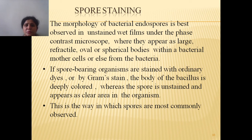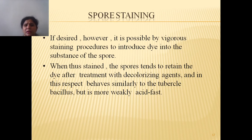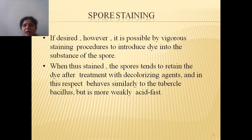The next type of differential staining is spore staining. Bacterial endospores can be easily observed; their morphology can be observed in unstained wet films under phase contrast microscopy. If spore-bearing organisms are stained with ordinary dyes or gram stain, the body of the bacillus is deeply colored while the spores are unstained and appear as clear areas in the microscope. It is possible to employ different staining procedures to introduce dye into the substance of the spore, and the spore will retain the dye after treatment with decolorizing agent — in this respect they behave like acid-fast bacteria.